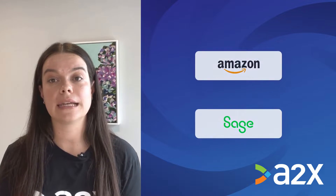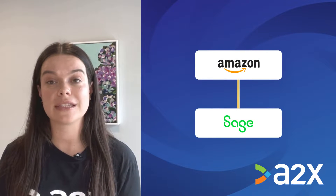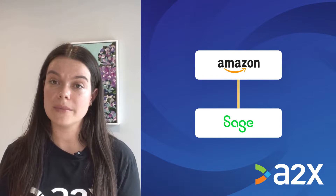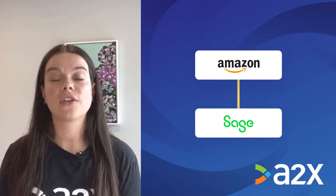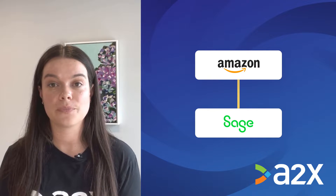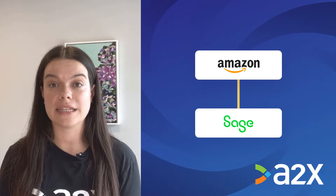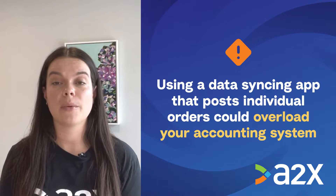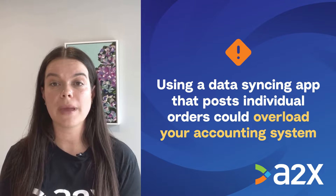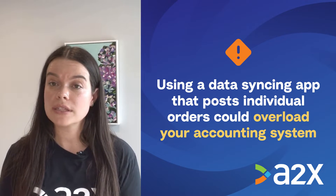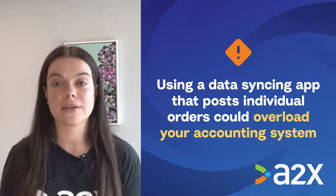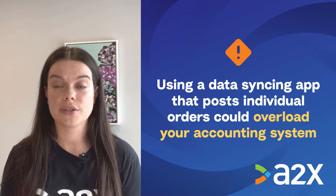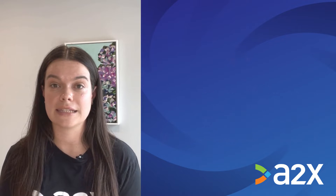That's why setting up an integration between Amazon Seller Central and Sage can help. An integration will allow your Amazon transaction data to flow seamlessly into Sage. There are a couple of ways you could set this up. One option is to use a generic data syncing app that posts individual orders from Amazon to Sage. This could work if you're a smaller Amazon seller, but you might run into some issues as your store grows — for example, it could clog your accounting system.